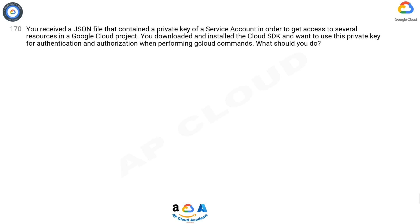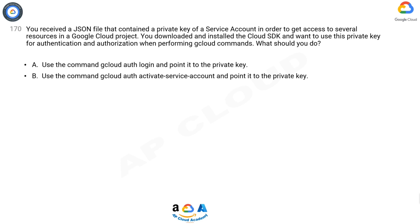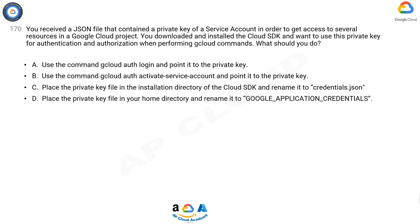Question 170: You received a JSON file that contained a private key of a service account in order to get access to several resources in a Google Cloud project. You downloaded and installed the Cloud SDK and want to use this private key for authentication and authorization when performing cloud commands. What should you do? A: Use the command 'gcloud auth login' and point it to the private key.